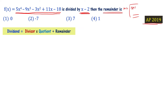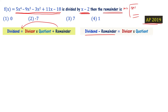Suppose the remainder is the answer to be found. Then dividend minus remainder equals divisor times quotient. So dividend minus remainder means the divisor is a factor and the quotient is another factor. You divide the dividend minus remainder by the divisor.